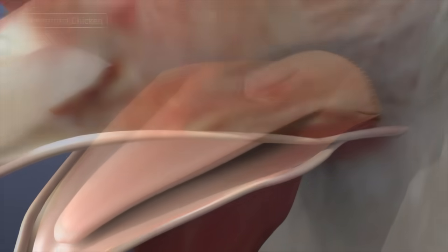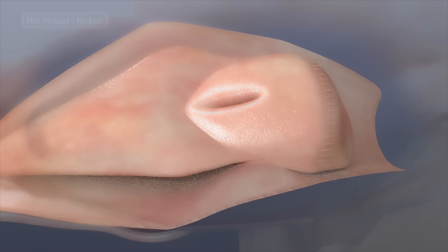Behind the tongue is the laryngeal mound that contains a narrow slit that opens into the glottis of the larynx. Its function is to aid in moving food toward the esophagus during swallowing.